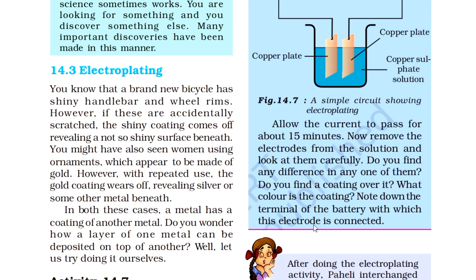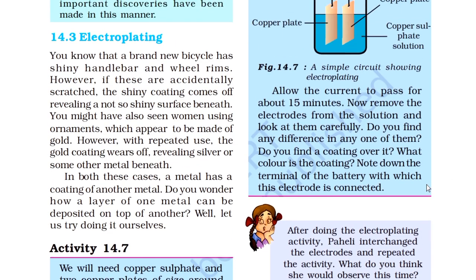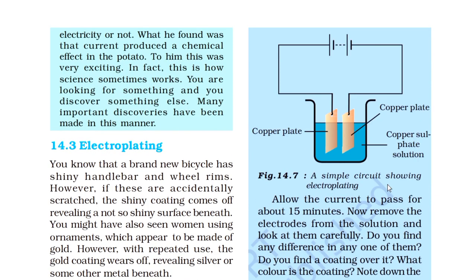यह थी हमारी पूरी activity। इस process से समझ आता है कि कैसे electroplating होती है — कैसे एक metal के ऊपर दूसरे metal की plating होती है। जैसे यहाँ copper की plating की, उसी तरह gold की plating भी होती है। नकली आभूषणों में लोहे के ऊपर gold की plating की जाती है — बाहर से सोना दिखता है, अंदर से लोहा होता है।